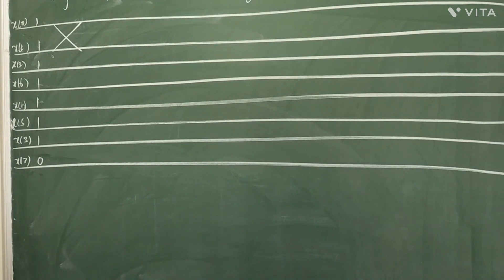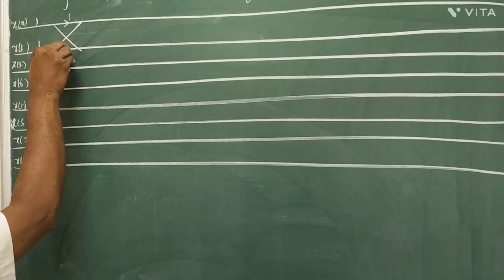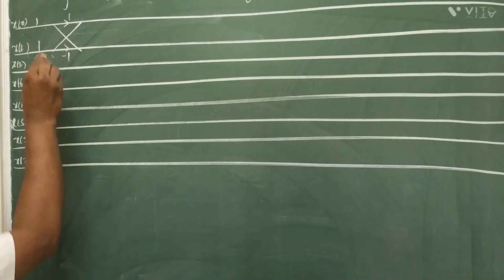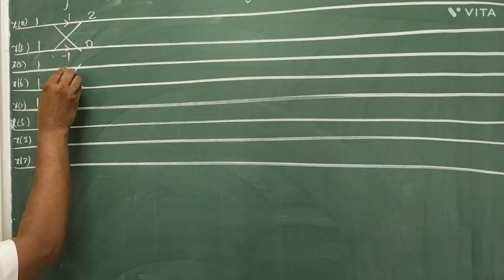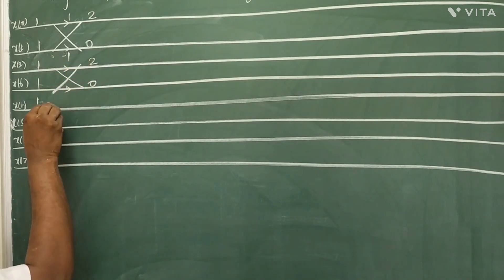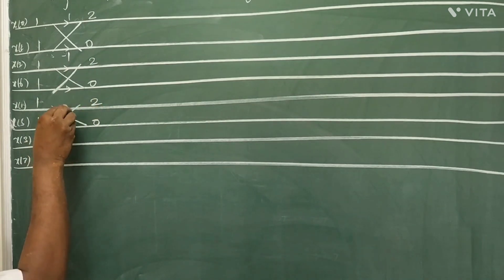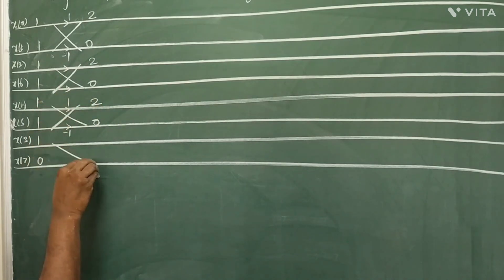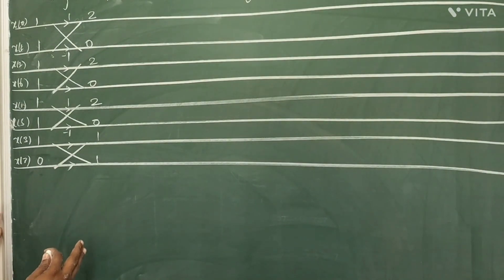Draw four butterflies for Stage 1 — the upper end is addition and the lower end is subtraction. Computing: 1+1=2, 1-1=0; then 1+1=2, 1-1=0; then 1+1=2, 1-1=0; and 1+0=1, 1-0=1. So the Stage 1 outputs are: 2, 0, 2, 0, 2, 0, 1, 1.